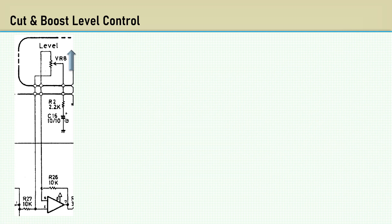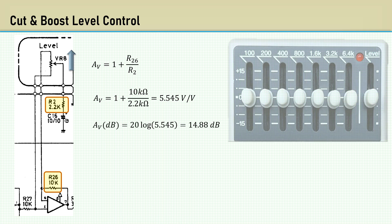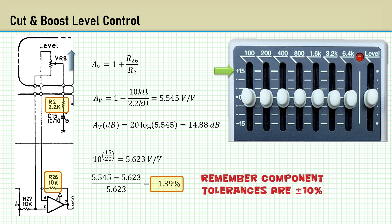With the pot in the max-boost position, the voltage gain is 1 plus R26 over R2. This results in a gain of 5.545, which is 14.88 dB, very close to the specified 15 dB. In fact, the resulting gain is only 1.39% less than the exact gain of 15 dB.